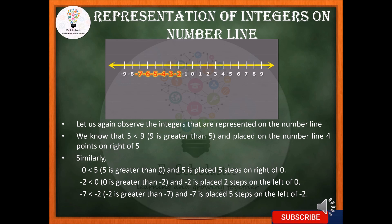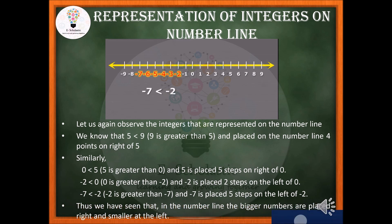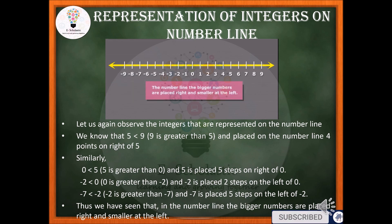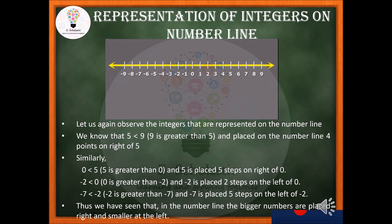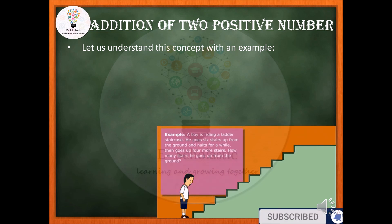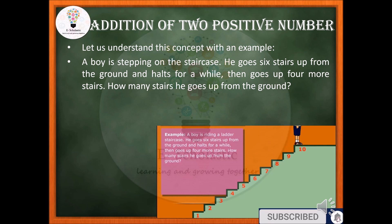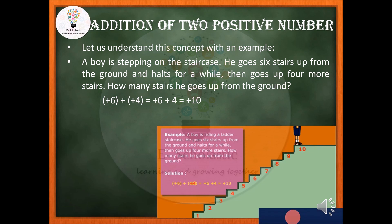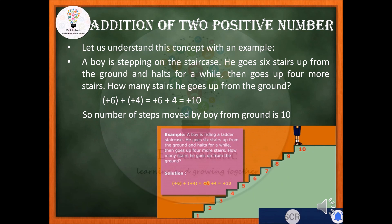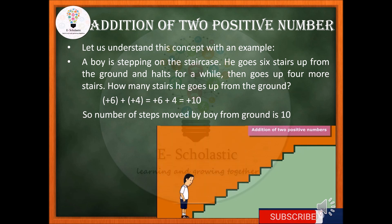On the number line, bigger numbers are always placed on the right side and smaller numbers are on the left side. To add two positive integers, consider this example: a boy steps on a staircase, goes 6 steps up from the ground, halts, then goes up 4 more stairs. The total steps from the ground is plus 6 plus plus 4, which gives us 10.